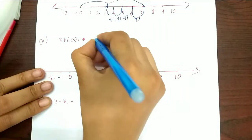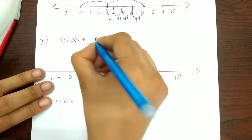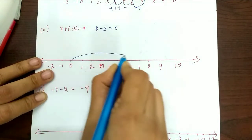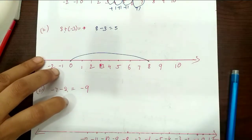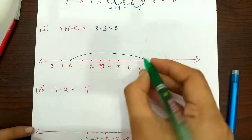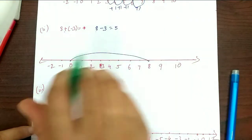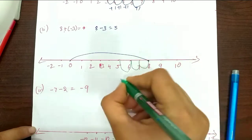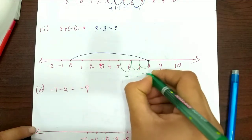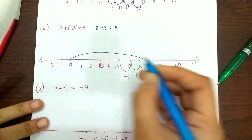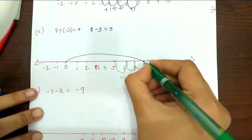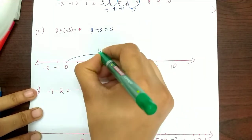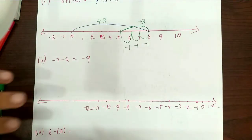Next: 8 plus minus 3, which equals 8 minus 3. Start at 8 on the number line, then move 3 units to the left side. Moving 1, 2, 3 units in the negative direction. So the result is 5. This is minus 3 and plus 8, giving us 5.